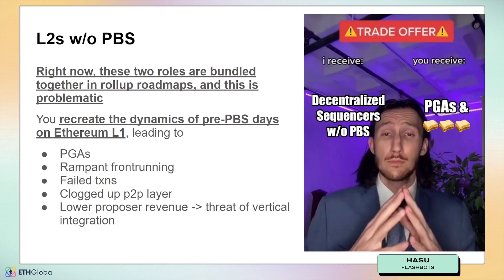Because if you do layer twos without proposer-builder separation, then you have the two roles bundled, like they used to be bundled in Ethereum layer one before MEV was a big deal. But now MEV is a big deal. What would happen is you recreate the dynamics of pre-PBS days from Ethereum layer one on these rollups. You get priority gas auctions again, you get front running, you get failed transactions, and a clogged P2P layer from searcher strategies being forced to compete at inefficient MEV auctions. And because the auction is less efficient, you also get lower proposer revenue, which leads to a threat of vertical integration between searchers and block builders.